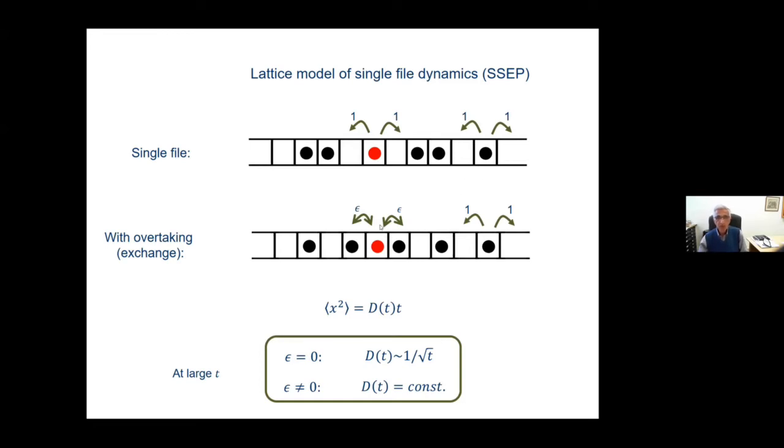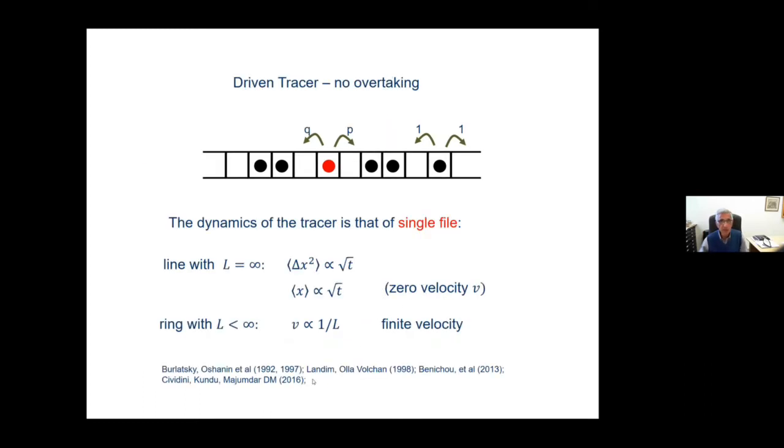On the other hand, if you want to simulate the way they can overtake each other, you can add a rate epsilon for which particles can exchange with nearest neighbor particles. And when you add this epsilon, then immediately the dynamics becomes diffusive. So that for epsilon equal to zero, you get square root behavior; for epsilon not equal to zero, it becomes diffusive.